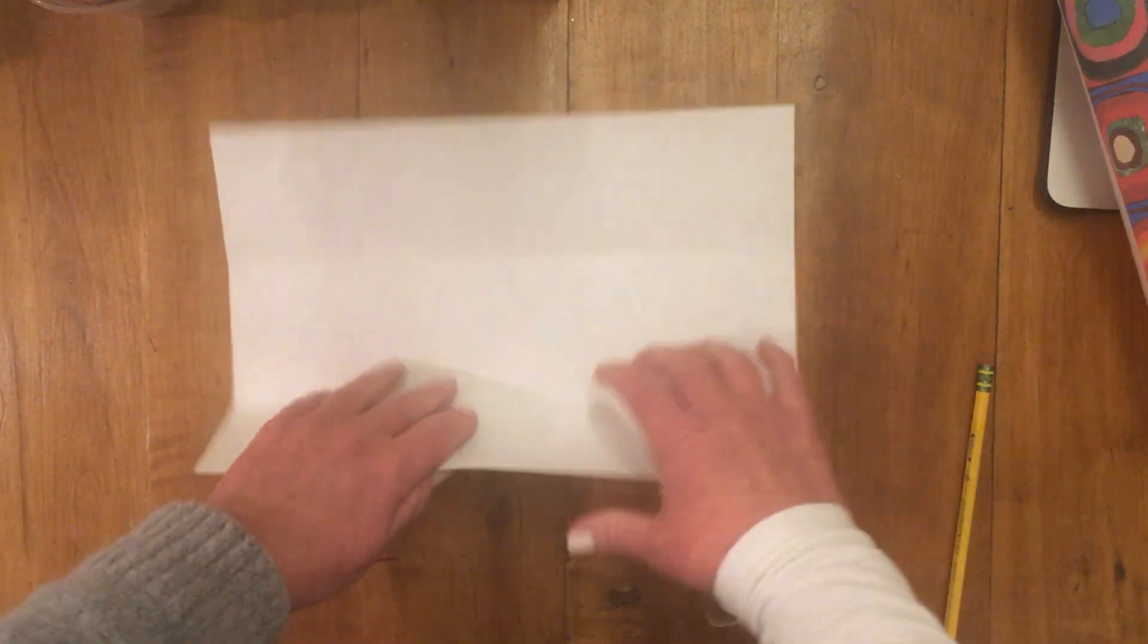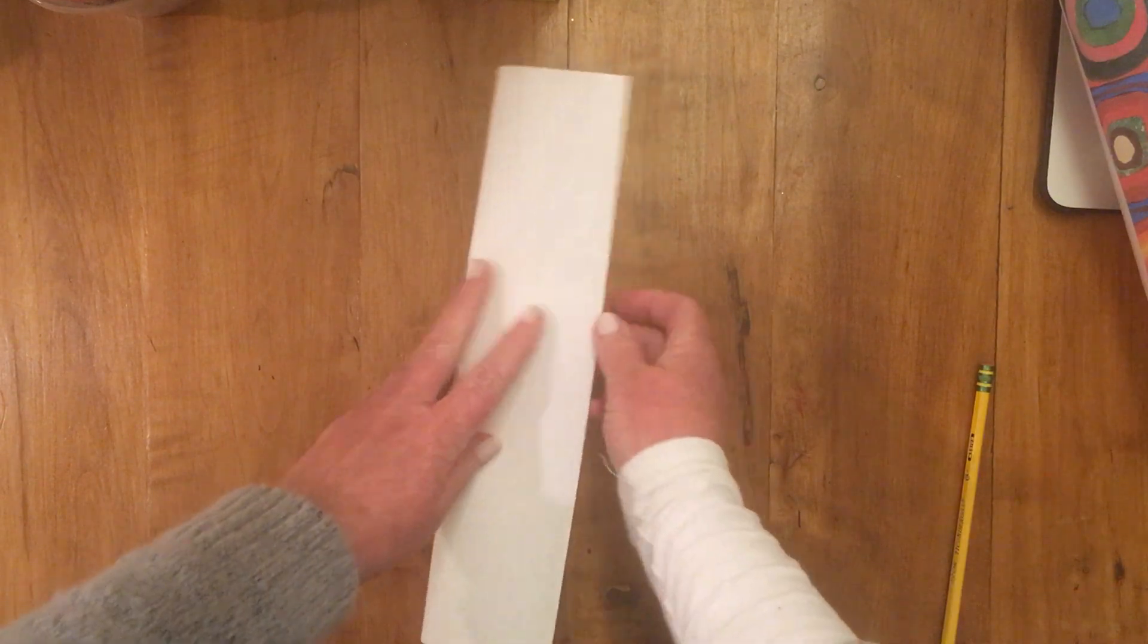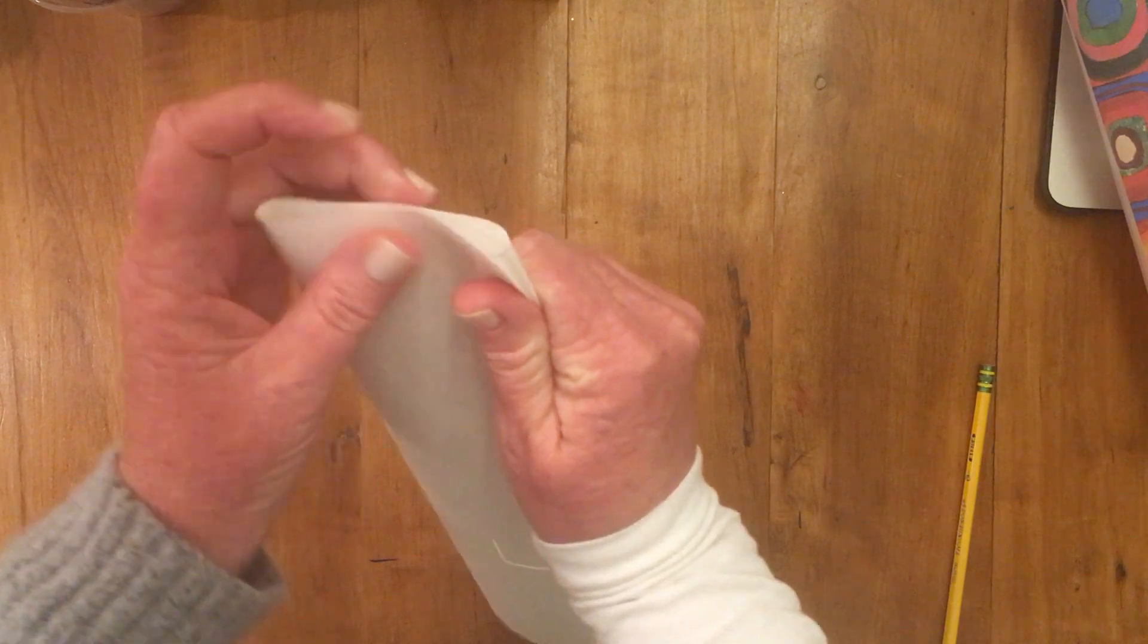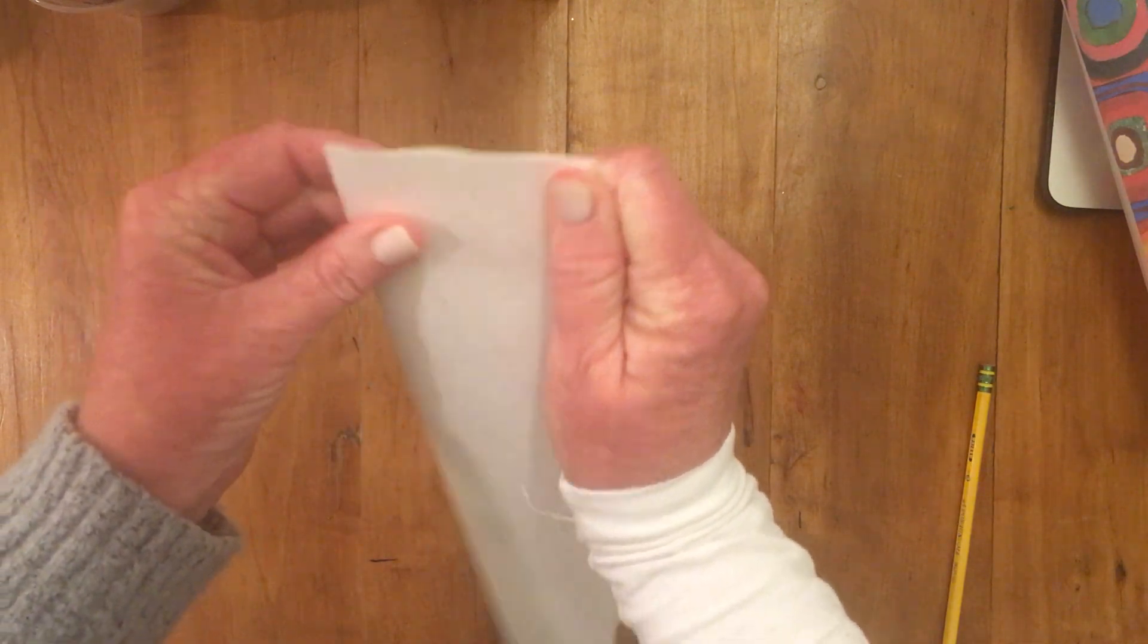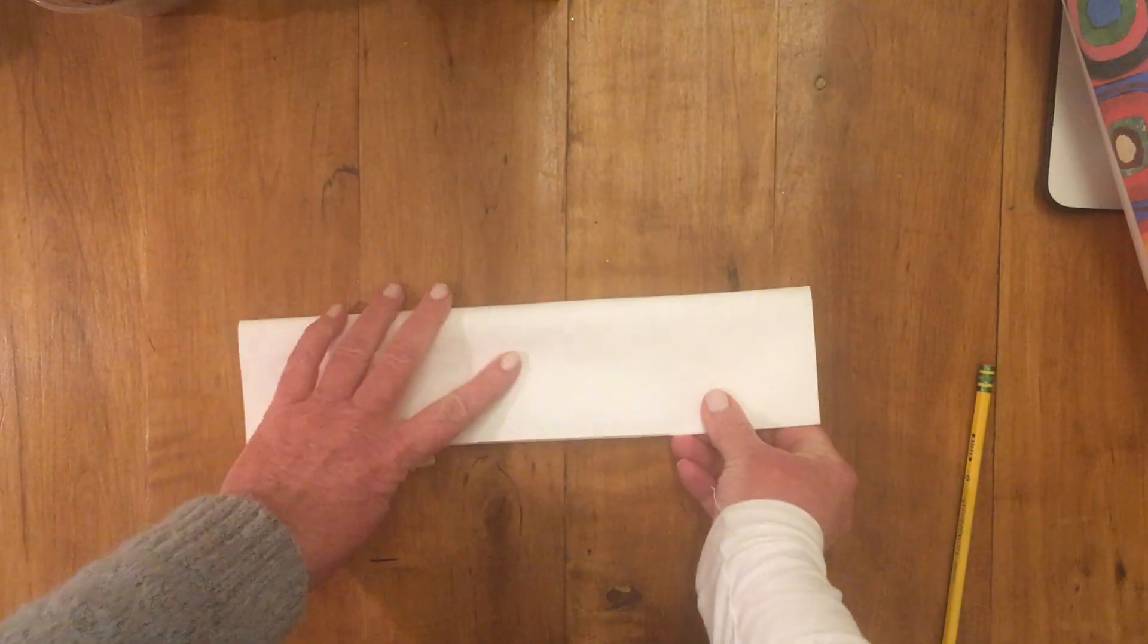You don't really need a ruler for this. We don't need to be that exact. I'm going to just match my edges of my paper up by folding it into thirds. This paper, mine measures 9 by 12, so by folding it in thirds this way and in half here, matching up my corners.